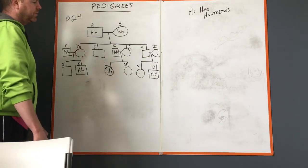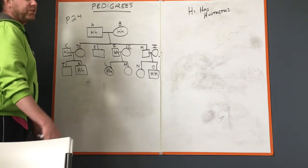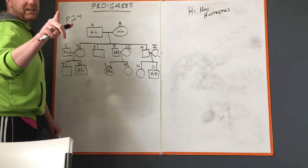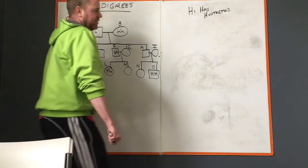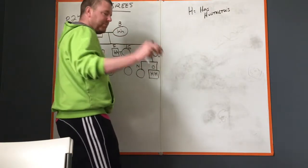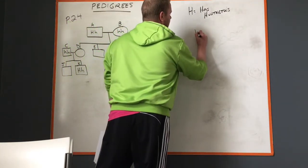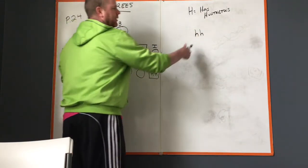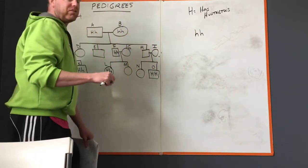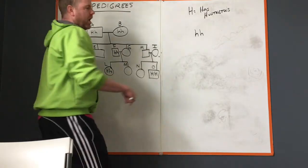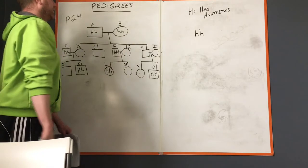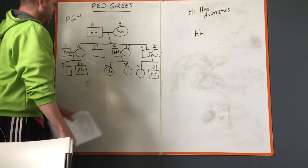She went for genetic testing and screening and she did not carry the allele for Huntington's. She was little h little h, meaning if and when she ever went to have children, could she ever pass Huntington's on to her kids? Nope, she didn't carry the capital H. That was a pretty cool day.